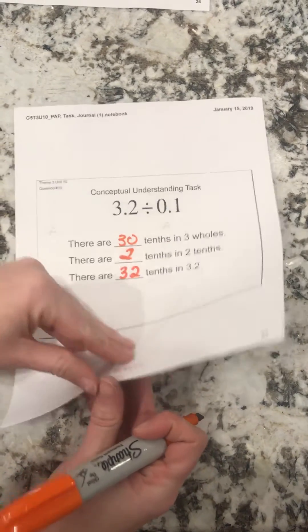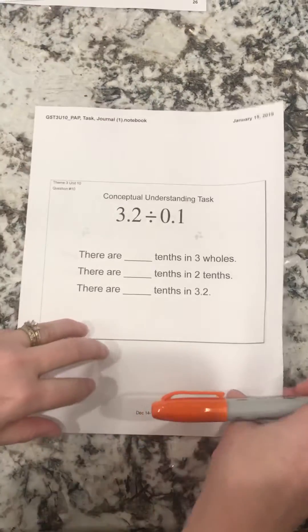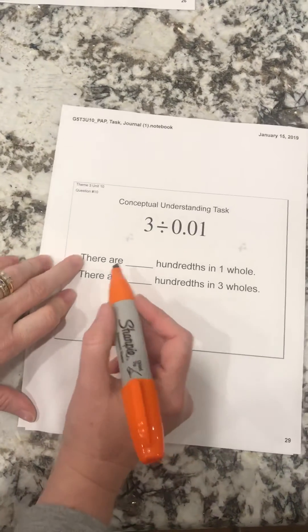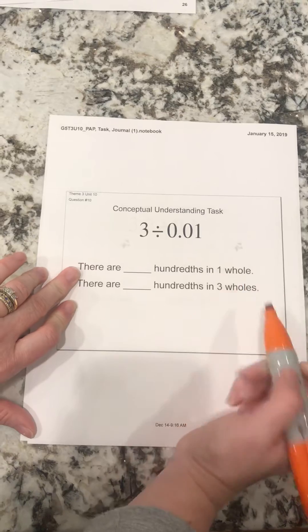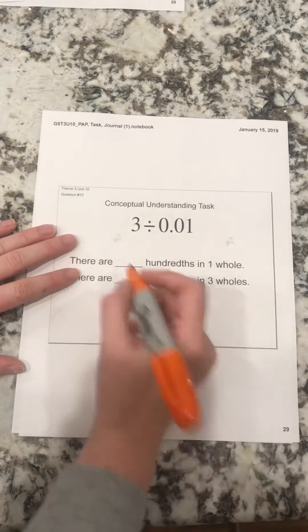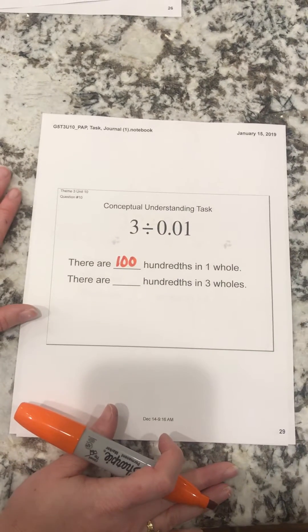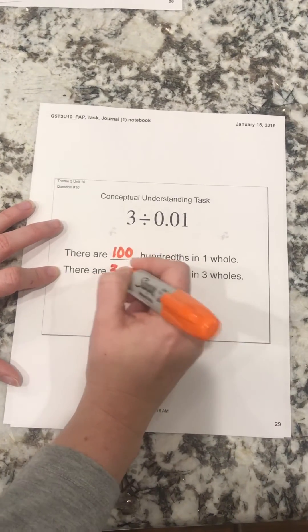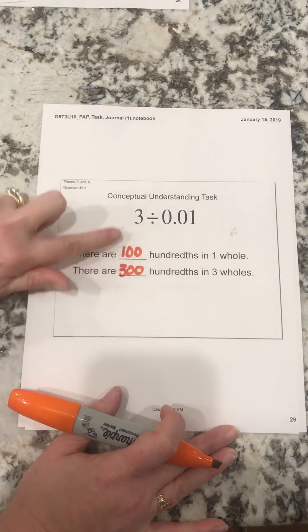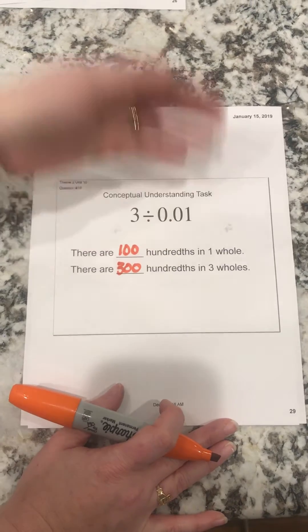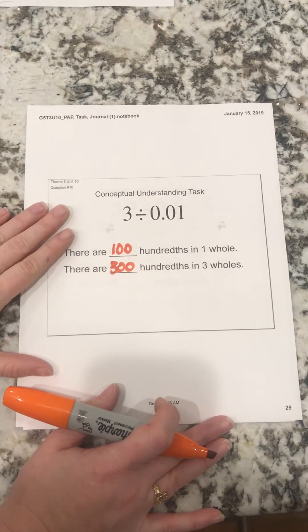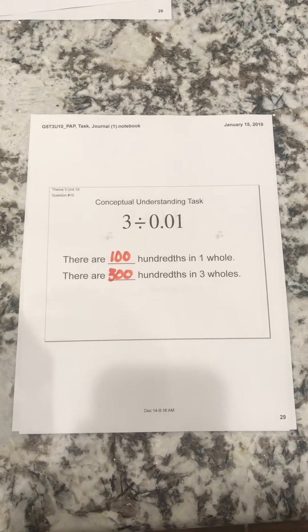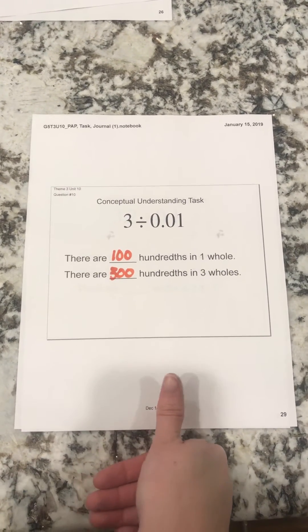Looking at our next example from our conceptual understanding task, let's look at our hundredths. So there are blank hundredths in one whole. For the sake of time, I'm not going to actually build this out, but I know that there are 100 hundredths in one whole. There are blank hundredths in three wholes — there are 300 hundredths in three wholes. I know that because if I have one whole that's 100 hundredths, three would be 300. Making that connection between the value of a tenth and the value of hundredths is going to be really powerful here.